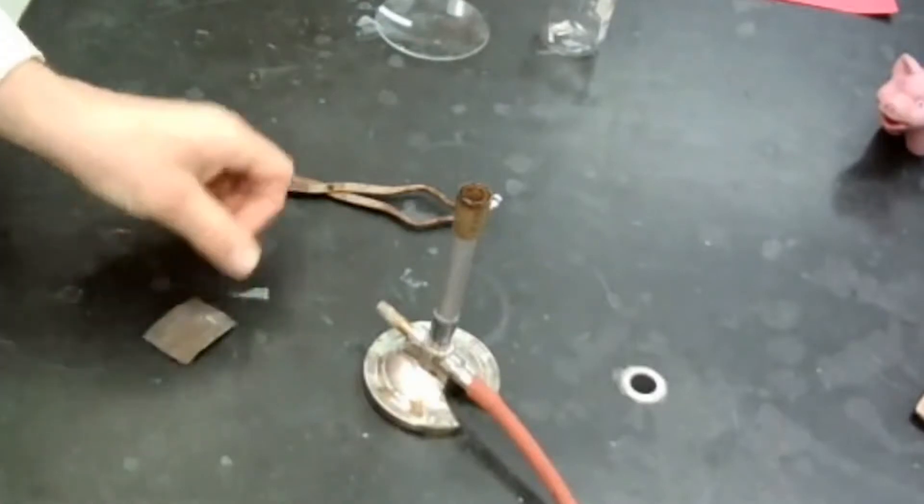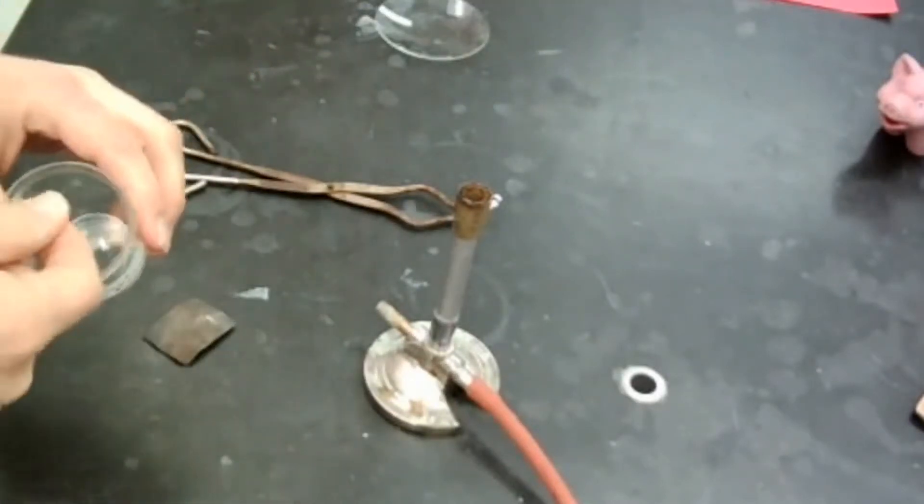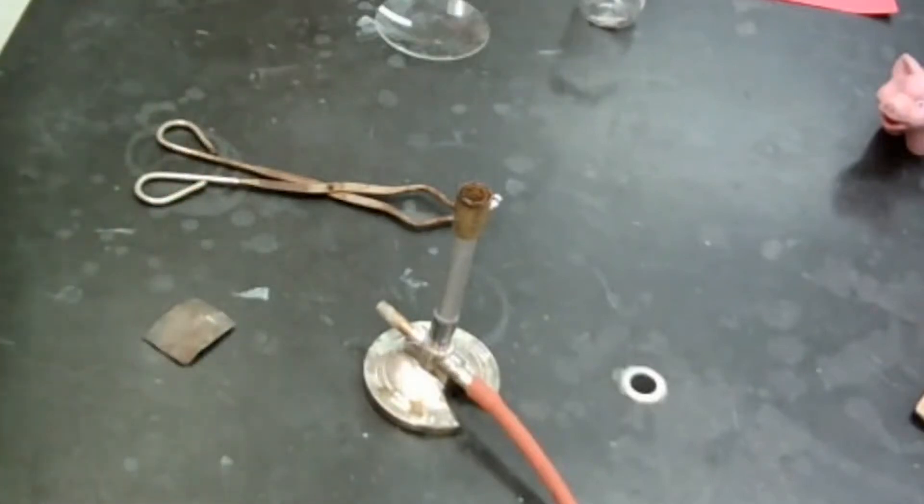Alright, so without further ado, we'll get started. First part of this is making observations, and so I'm going to grab a piece of magnesium ribbon. So let's look at what our reactants would be. These are the things that go into the reaction.